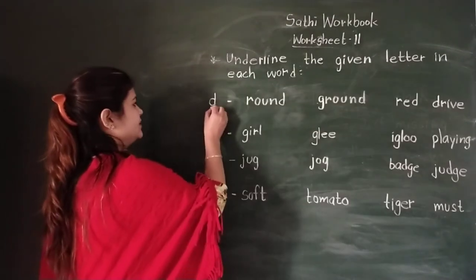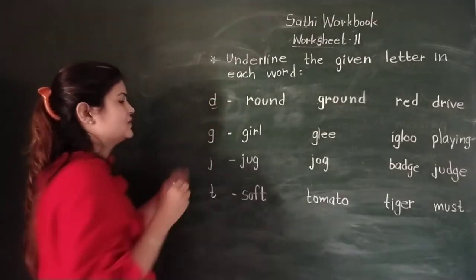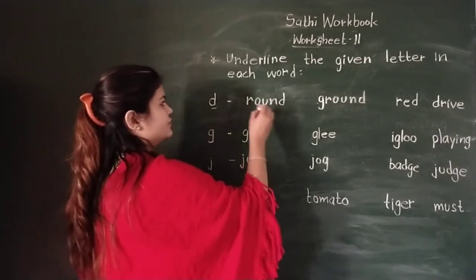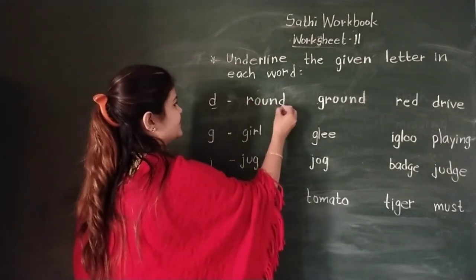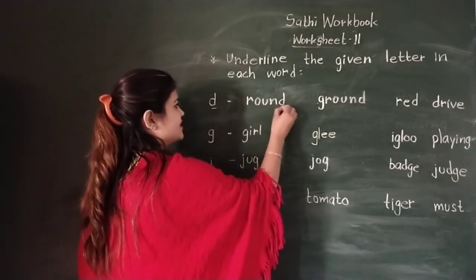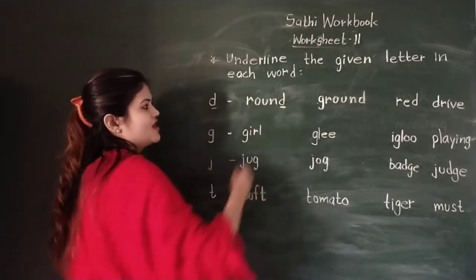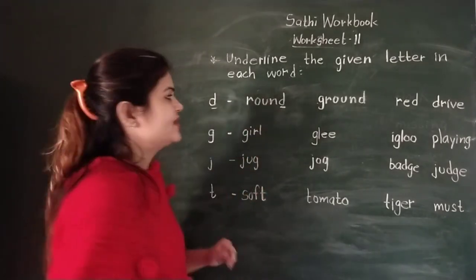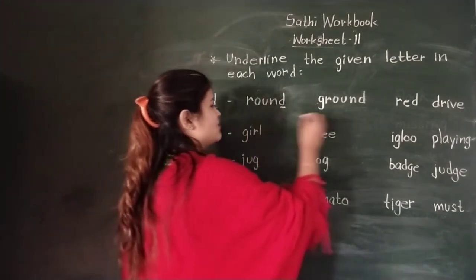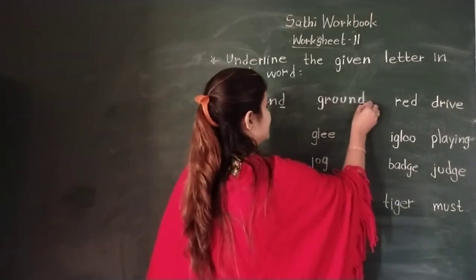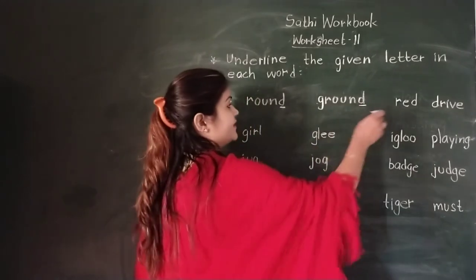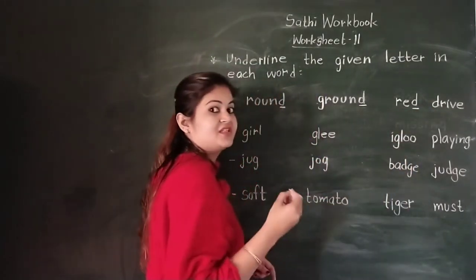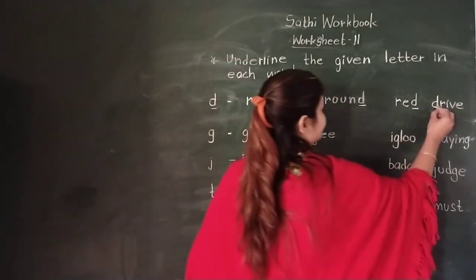Here is letter D. Which letter is D? In 'round', see where letter D is. Next word is 'ground' - ground has letter D. Then 'red' - D is at the last. And 'dry' - D is at the starting.